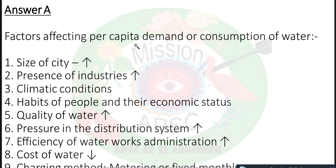If the city is very small, the consumption will be more with the increment of the size of the city. The presence of industry also affects consumption — if the city is very small then the water consumption is very small as compared to the rural area. In industry there is more water consumption.